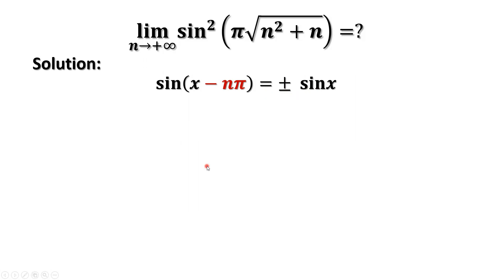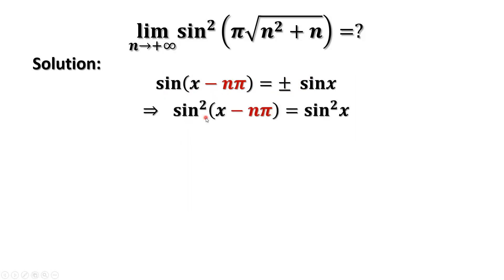We can easily prove this identity using the difference formula for sine. Taking squares on both sides of this identity, we have sine squared of x minus n times pi equals sine squared of x.